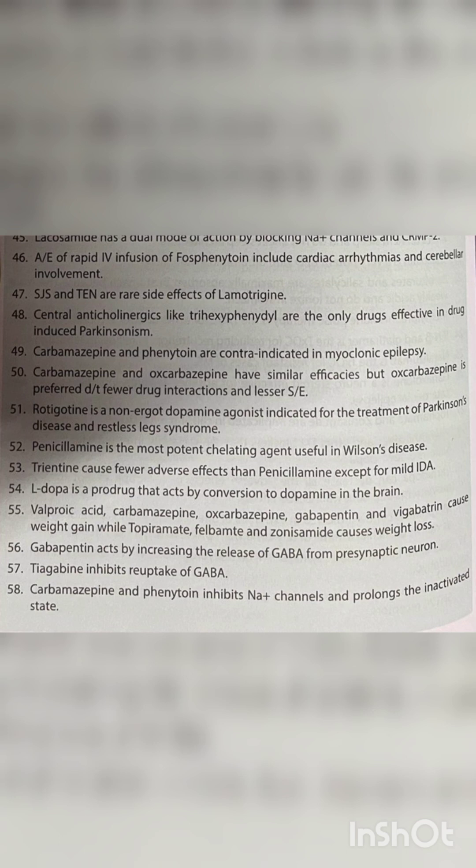L-Dopa is a pro-drug that acts by conversion to dopamine in the brain. Valproic acid, carbamazepine, oxcarbazepine, gabapentin and vigabatrin cause weight gain, while topiramate, felbamate and zonisamide cause weight loss. Trientine causes fewer adverse effects than penicillamine except for mild iron deficiency anemia. Gabapentin acts by increasing the release of GABA from the presynaptic neuron. Tiagabine inhibits reuptake of GABA.